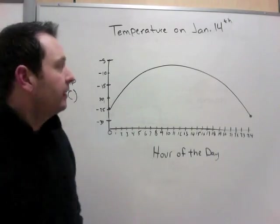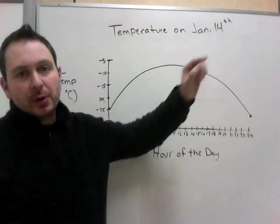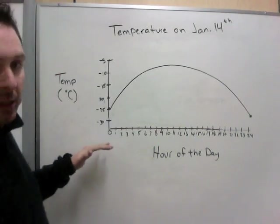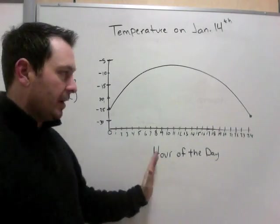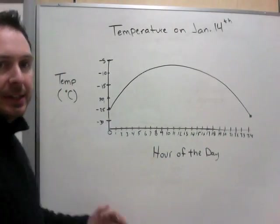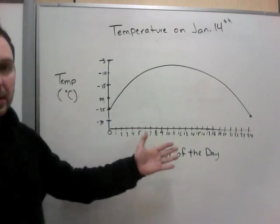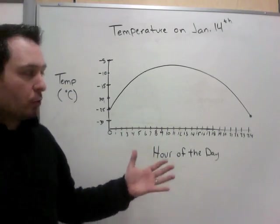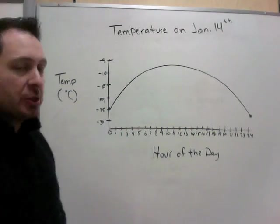Now we're looking at another graph. We have temperature on January 14. And we have our independent variable, hours of the day. The hours of the day are going to happen no matter what. And the temperature depends on the hour of the day. It's colder at night, warmer in the day.